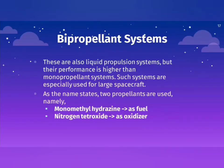Bi propellant systems are also liquid propulsion systems but their performance is higher than mono propellant systems. Such systems are especially used for large spacecraft. As the name implies, it has two propellants: mono methyl hydrazine as fuel and nitrogen tetroxide as oxidizer.